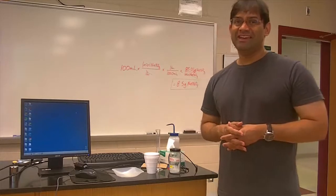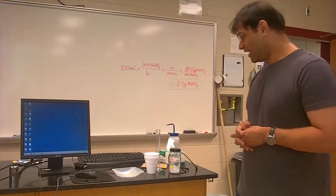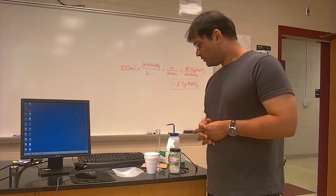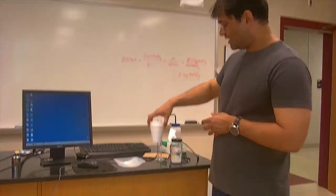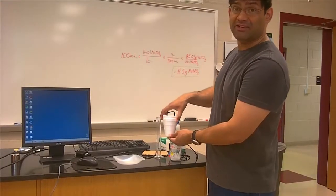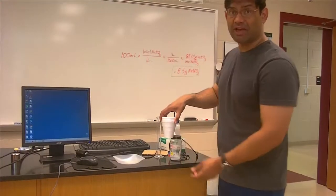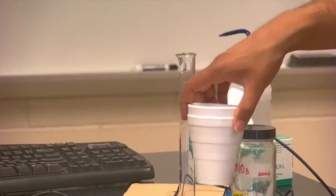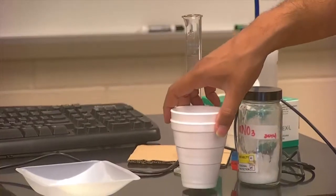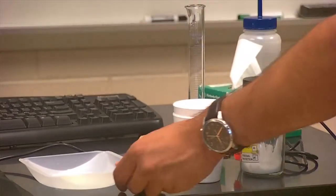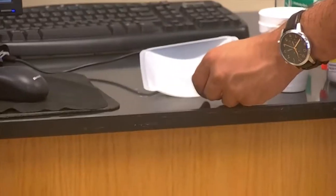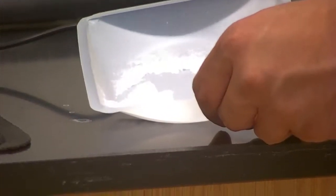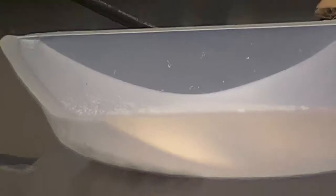You're measuring delta H. Our calorimeter is basically two styrofoam cups. I've already weighed out the appropriate amount of sodium nitrate, NaNO3.